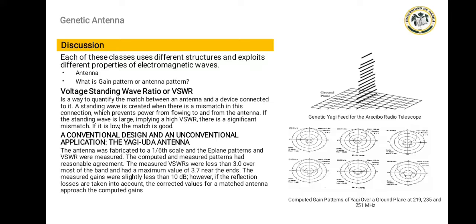Voltage Standing Wave Ratio or VSWR is a way to quantify the match between the antenna and the device connected to it. The standing wave is created when there is a mismatch in this connection, which prevents power from flowing to and from the antenna. If the standing wave is large, implying a high VSWR, there is a significant mismatch. If it is low, the match is good.